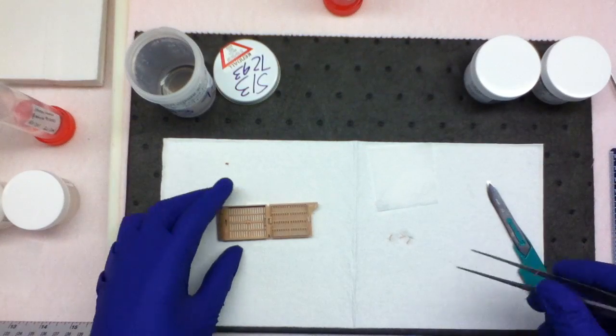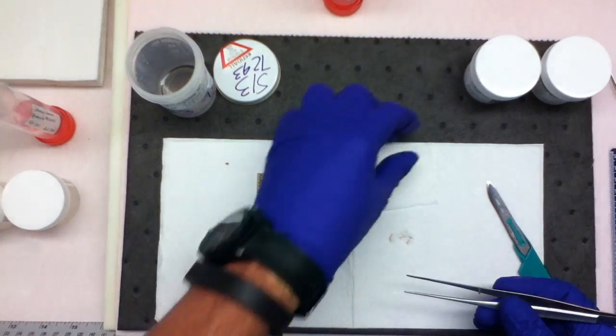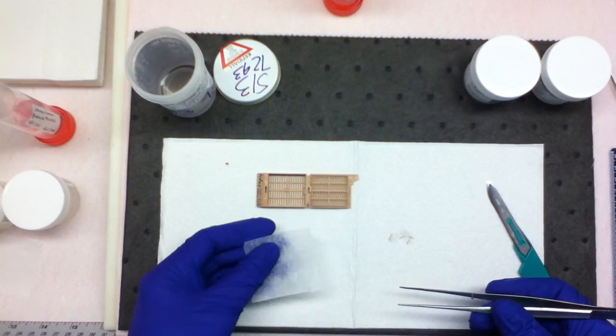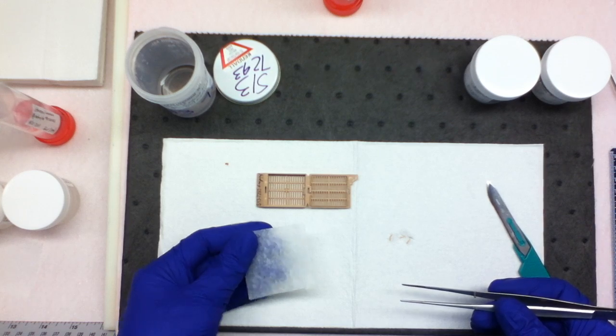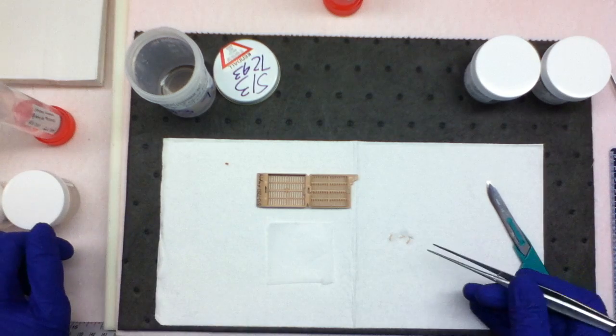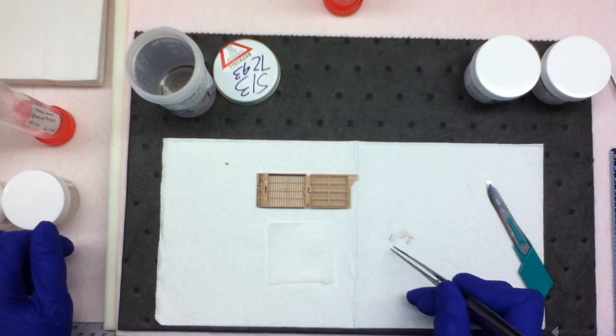Now we're going to submit our sample that's going to be for light microscopy. Anything that's received fresh, you do not want to use a bag or sponges with because they will distort the sample. You want to use lens paper.